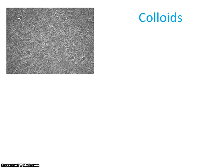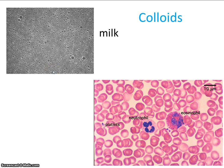Here are some examples of colloids. Milk is an example of a colloid — these little blobs are fat globules, and those will not settle out. Blood is another example. The watery component of your blood, the red blood cells, platelets (which help with blood clotting), and white blood cells like neutrophils and eosinophils are all present. You can imagine what would happen if your blood cells all pooled in your feet — that doesn't happen. In a colloid, the particles are large but they don't settle out.